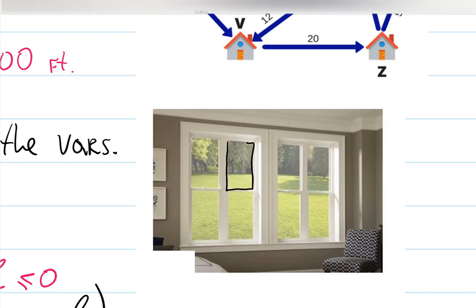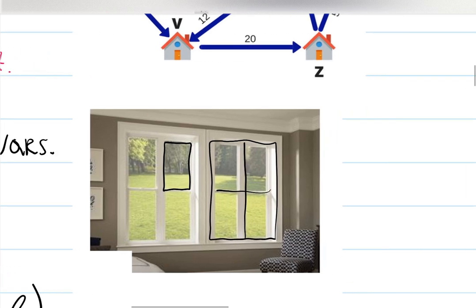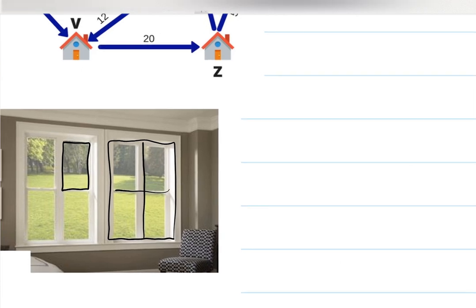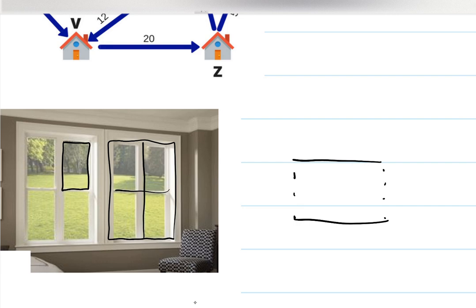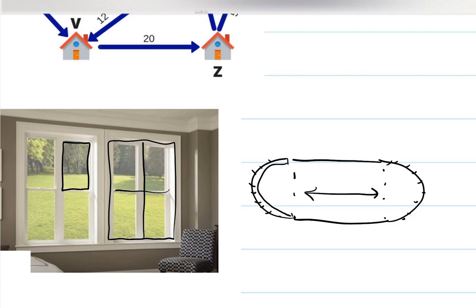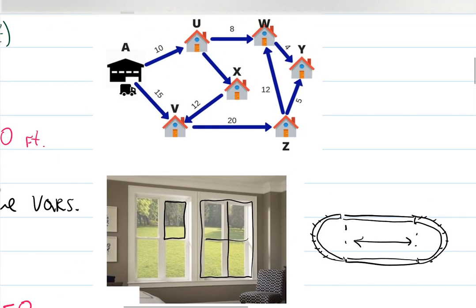The optimal shape to maximize running area is a circle — yet a football field is a rectangle with half-circles on the sides. That's because of additional restrictions: spectator seating and game distances. More restrictions change the optimal shape. That's what civil engineers and others do using calculus — optimize and minimize different problems.